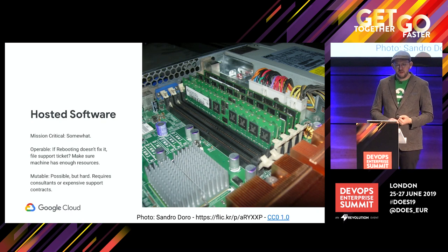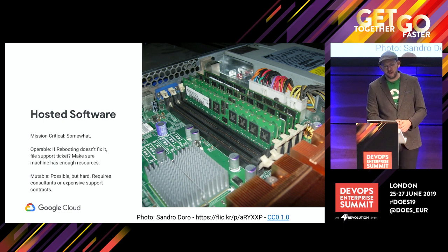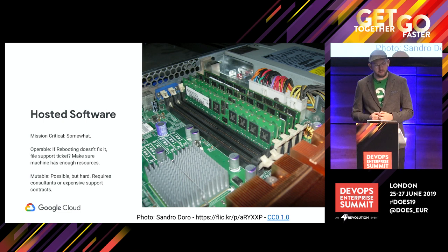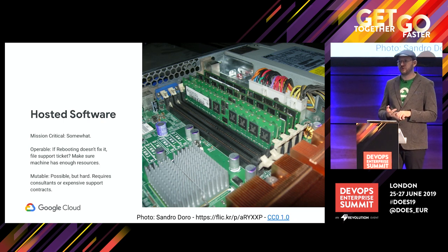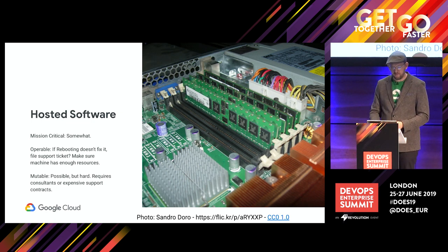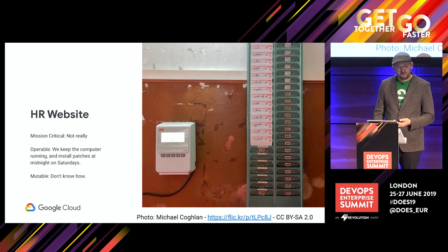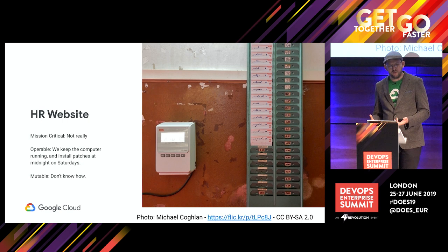Hosted software — software you run but didn't write yourself. Your business might be able to handle your CRM being down for a few hours, or it might be a critical dependency — the mission criticality depends very much on how you use it. As for operability, apart from making sure it doesn't run out of RAM, there's really not much to do — you just keep it running. And for mutability, it's not something you're going to be tasking your site reliability engineers to do much about, because it's somebody else's software. Similarly, an HR website likely isn't going to be mission critical enough to justify an SRE team — it might be operable and mutable, but is it going to justify the staffing? Is there something better to consider?